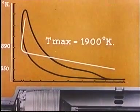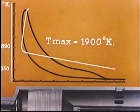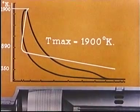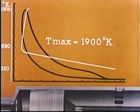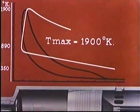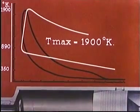The highest temperature occurs at the cessation of combustion. It is here found to be 1,900 degrees Kelvin. In this way, the whole of the temperature curve may be calculated, right up to the moment when the exhaust valve opens.